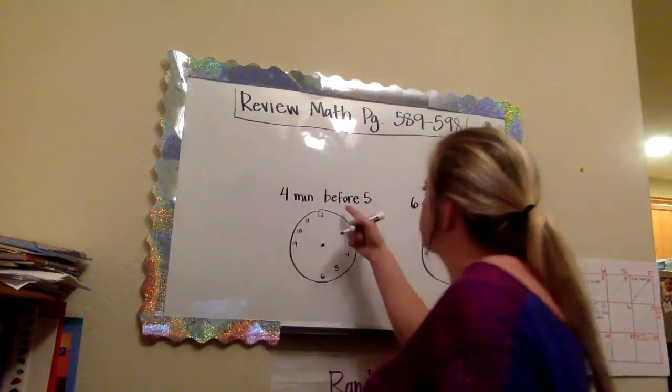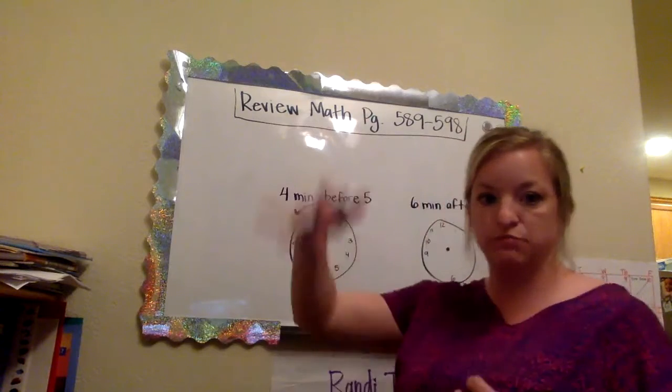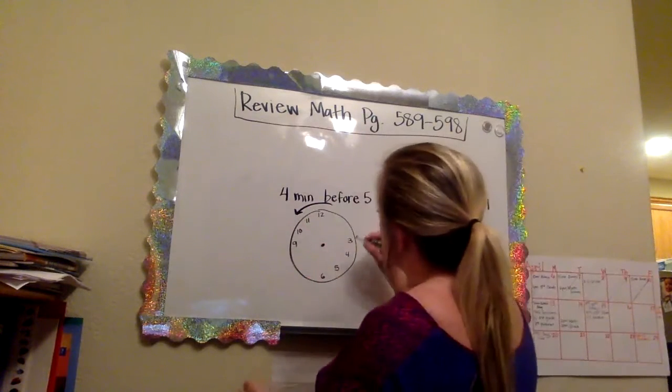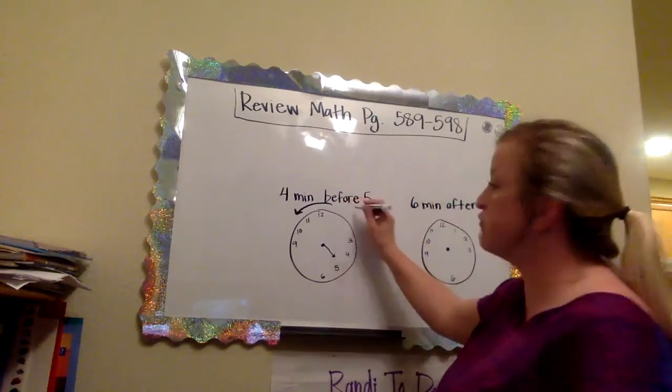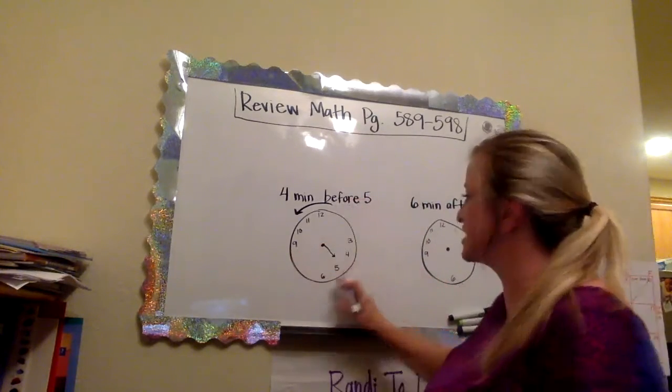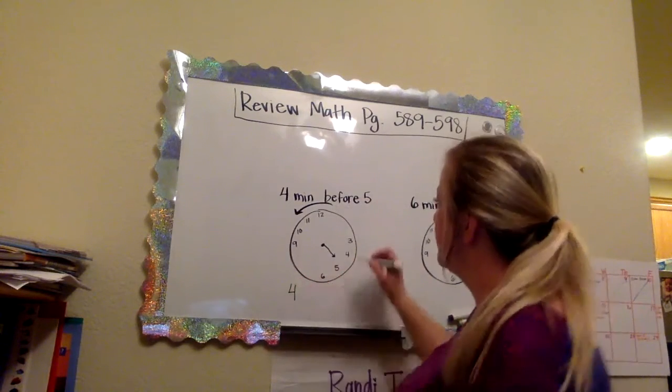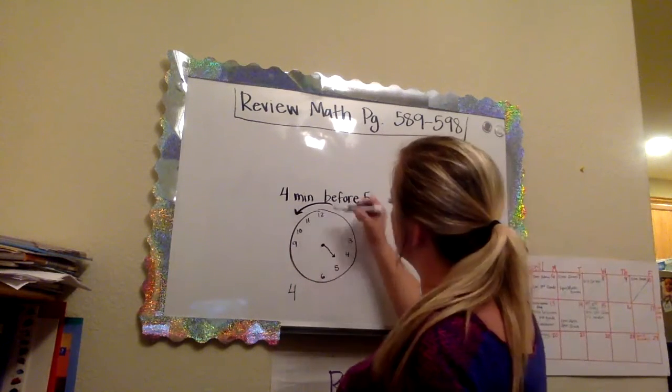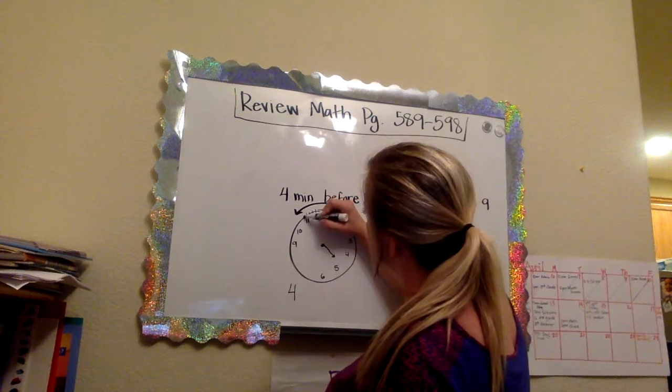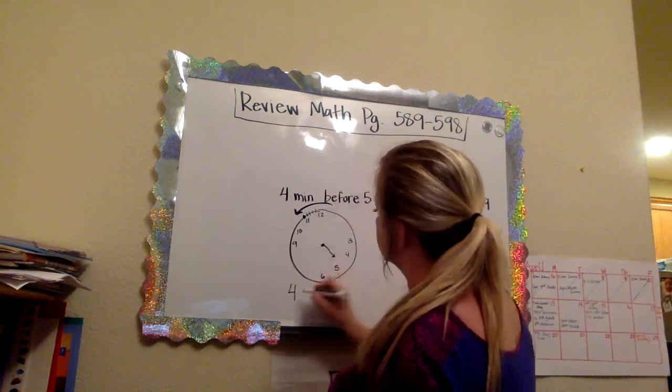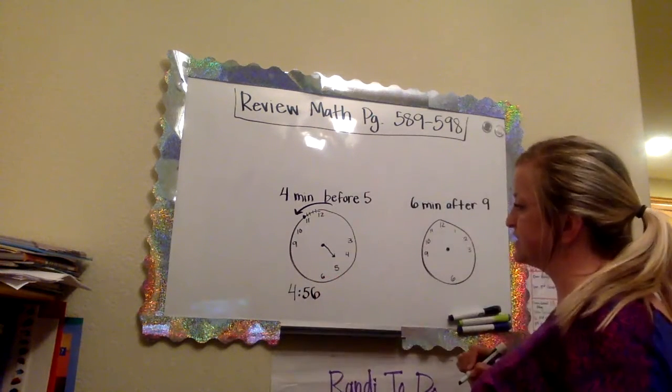If I have five minutes before five, if it's before, we're going to go backwards because it's before. It hasn't happened yet. So I'm going to draw my small hand here, and it isn't quite to the five because it's before five. So remember this is like a checkpoint. It is still four. And then we go four minutes before. So I'm going to go one, two, three, four. This is 55, 56. It is 4:56. Do you see how I did that?